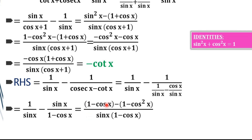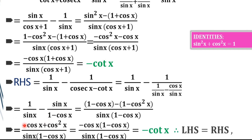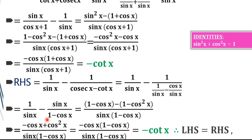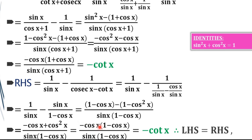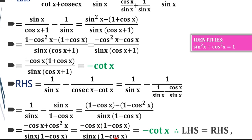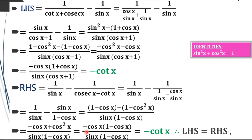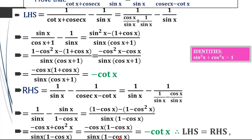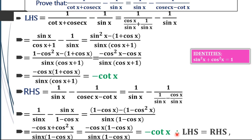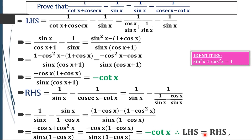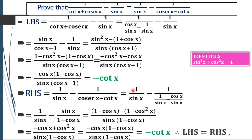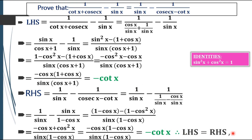Now 1 and negative 1 will cancel each other. What remains is minus cosx plus cosx. By taking minus cosx outside, we get 1 minus cosx divided by 1 minus cosx. These cancel each other, and what remains is minus cotx. Hence we proved the result: LHS is equal to RHS, and our result is proved.